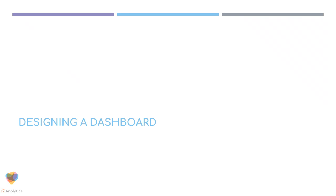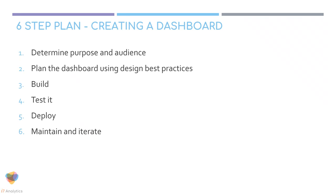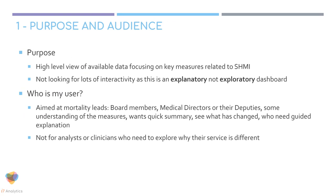Before building the dashboard in R, there's a six-step plan to creating a dashboard: determining purpose and audience, planning the dashboard using best design principles, building it, testing it, deploying it, and maintaining and iterating it. This talk will focus mainly on steps one through three. Testing, deploying, and maintenance have a few slides at the end. Iteration is a real challenge in R because of constant new packages — which is great, but when you're trying to create a stable product, it becomes all-consuming.